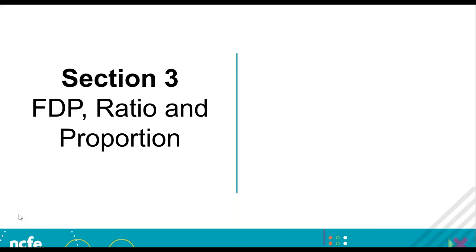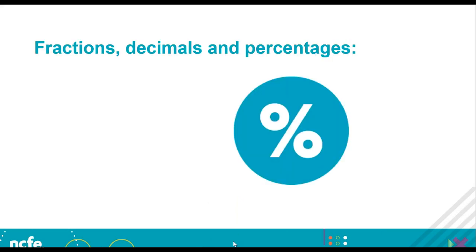Now we'll take a look at fractions, decimals, percentages, ratio and proportion. When it comes to fractions, decimals and percentages, the first thing to consider is irregular names. A small number of fractions have non-regular names such as a half, a third and a quarter. After that, they tend to follow a pattern of adding 'th' after the number, as in one sixth — but one fifth and one twelfth are also exceptions. This links with place value: 0.1 is one tenth and 0.01 is one hundredth. Learners will need to make this link between decimals and fractions.